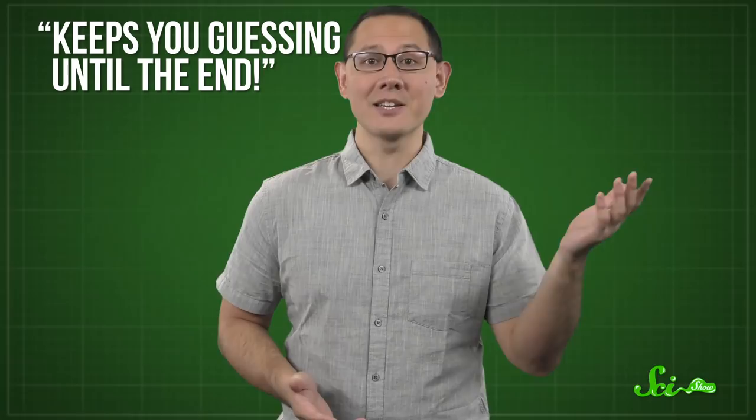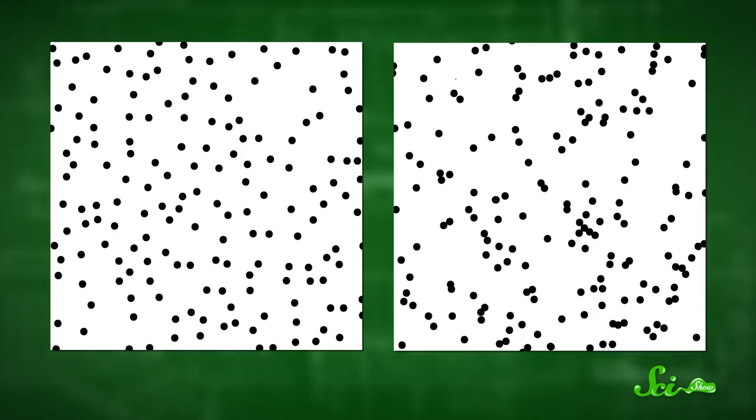The first problem to solve is how to even define randomness, because our intuitions about what's random aren't always great. Take this demonstration from paleontologist and author Stephen Jay Gould. In which image would you guess the dots were placed totally at random? If you guess the one on the left, you're not alone. Most people see the clumps in the right image as patterns. But in fact, it's just the opposite. It's the even spacing on the left that's the result of a pattern. The program that generated the dots was modified to forbid them from being too close together. And here's another brain twist. Tossing a coin 20 times is just as likely to produce 10 heads and then 10 tails as it is to mix them up. Neither sequence is inherently less random.